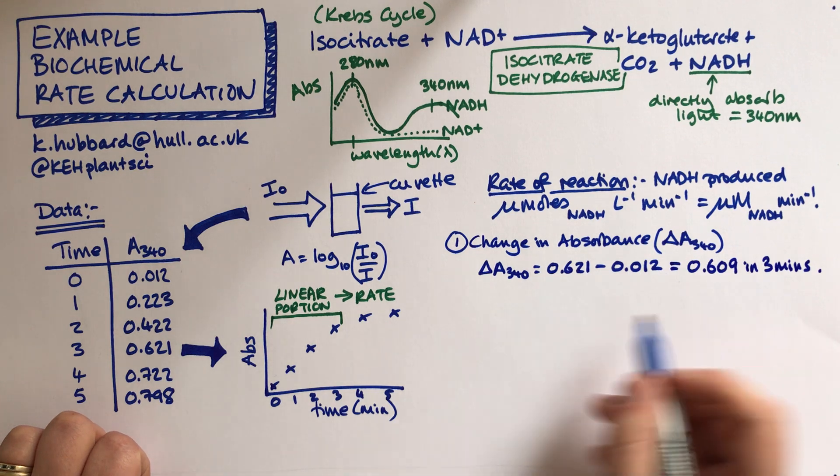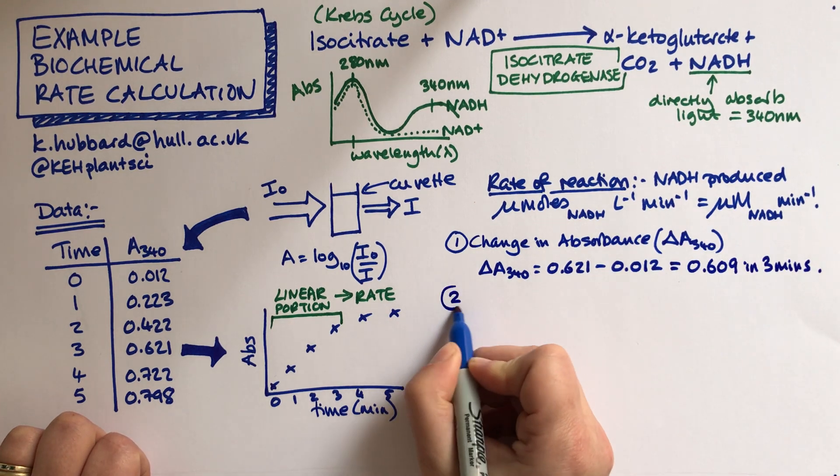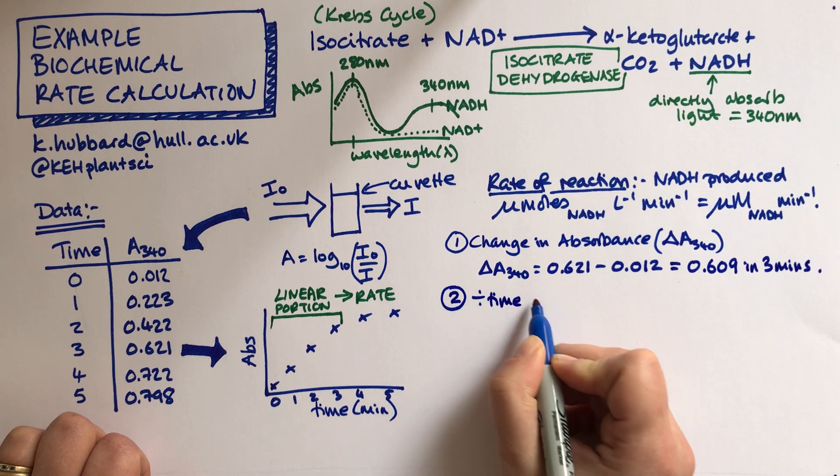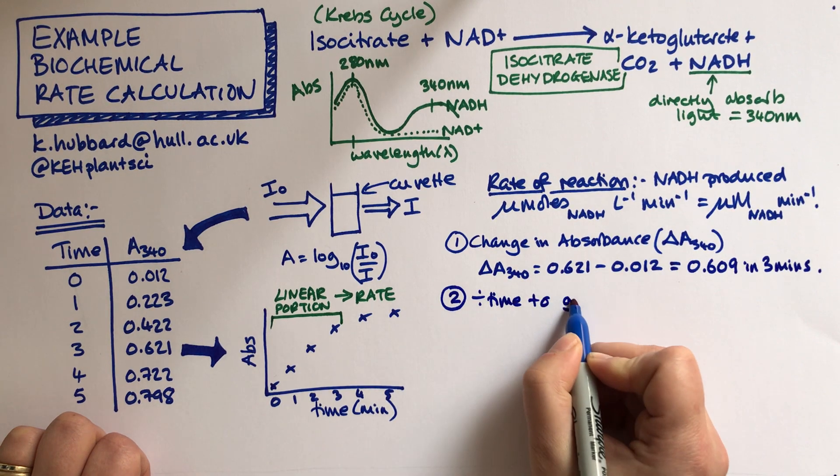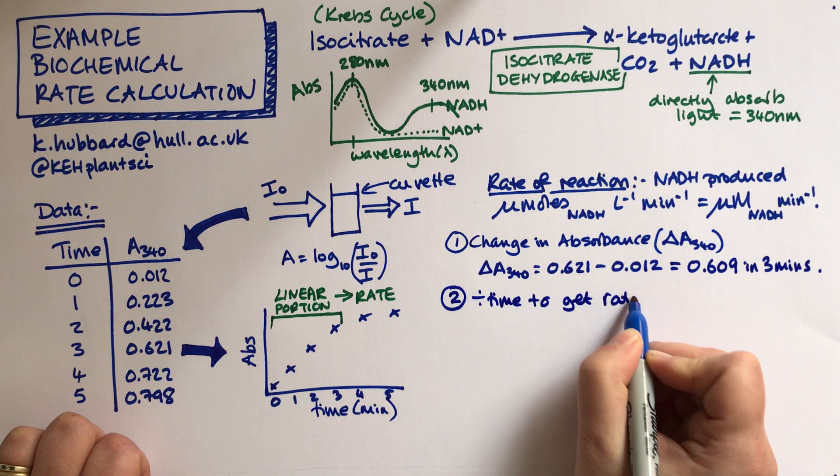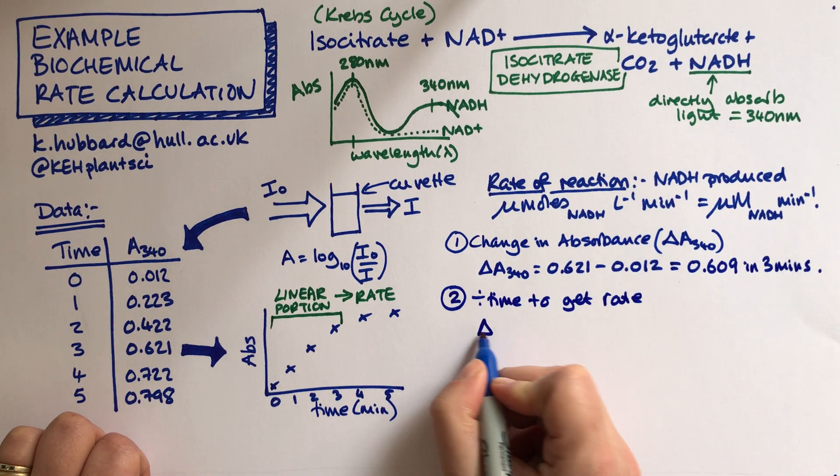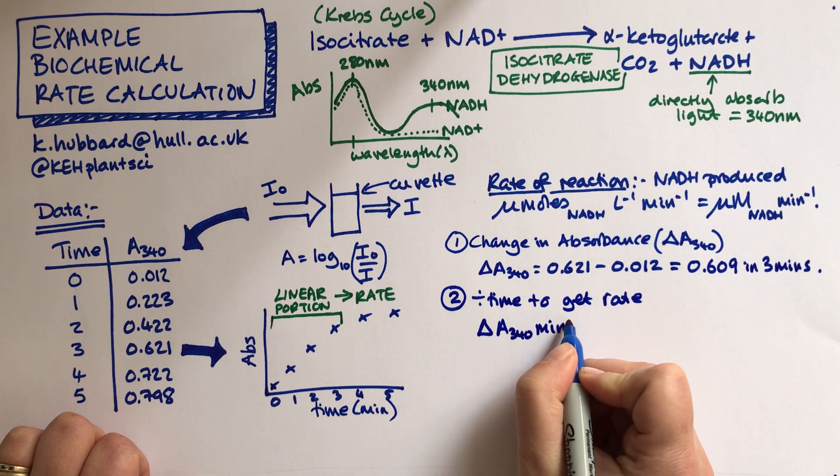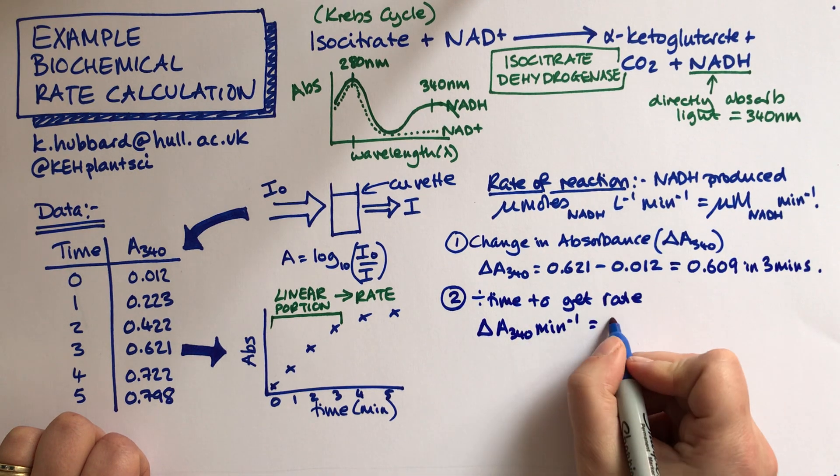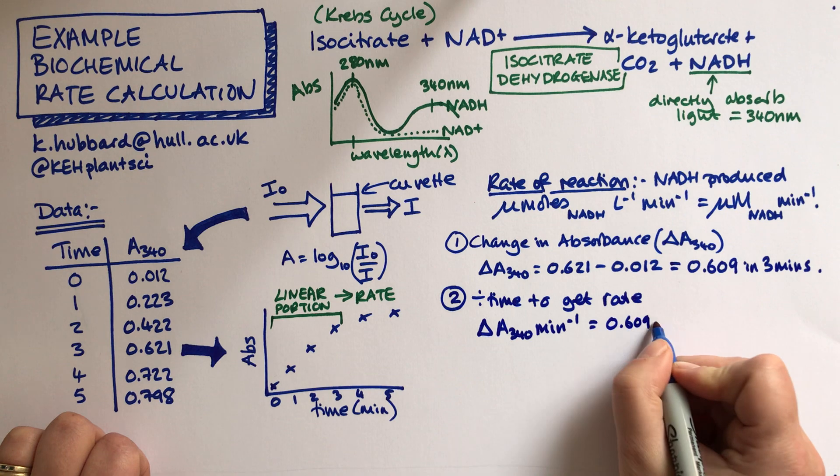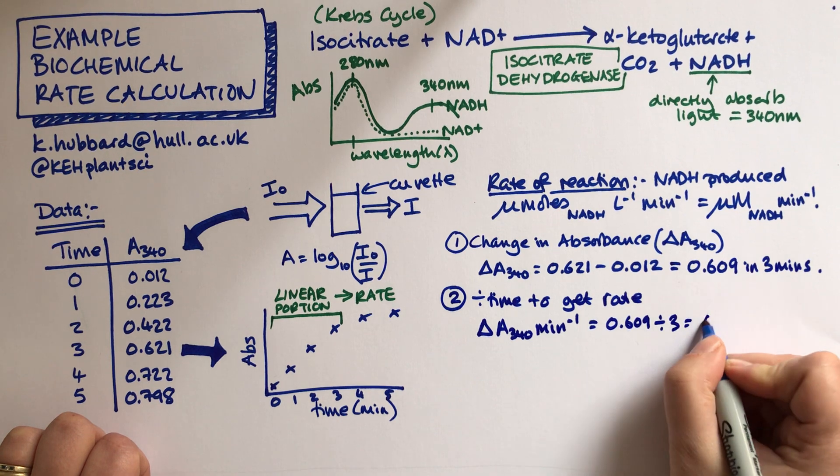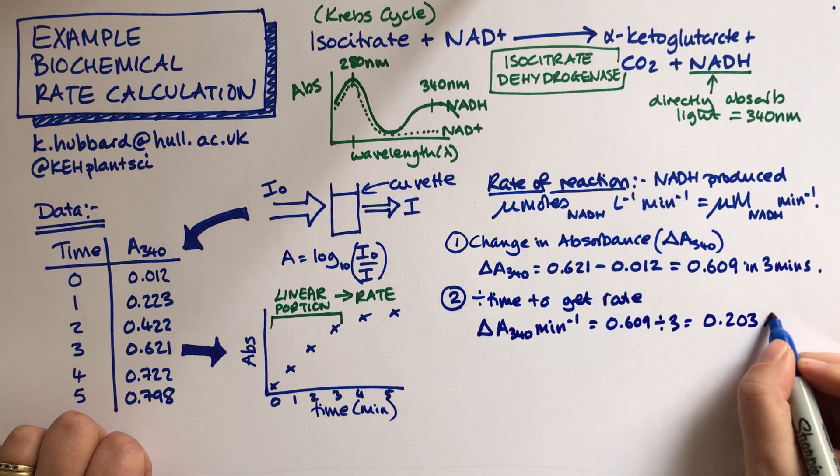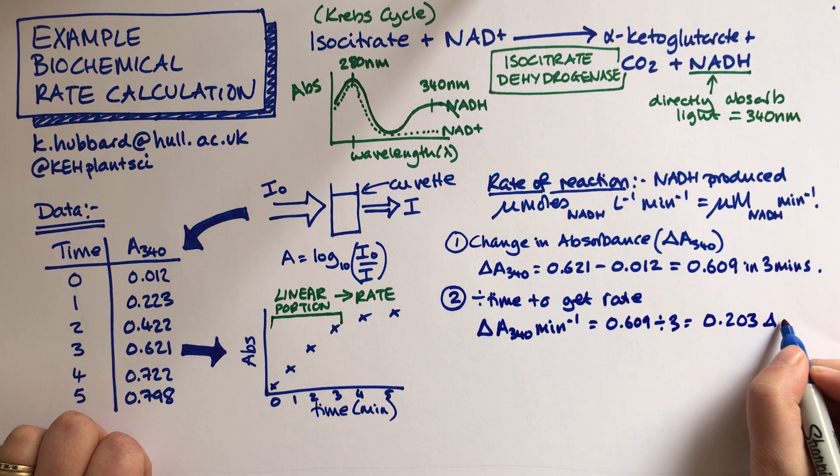The second thing to do is to divide by time to get a rate. So then we've got delta A 340 per minute equals 0.609 divided by three equals 0.203 absorbance units per minute.